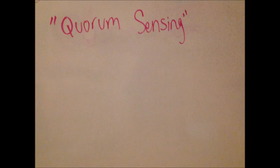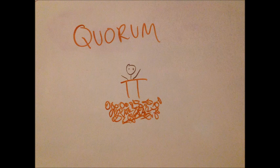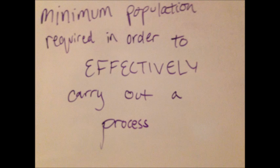Let's start with the word itself, quorum sensing. The word quorum is a Latin word meaning the minimum number of members of an assembly or society that must be present at any of its meetings to make the proceedings of that meeting valid. In other words, the quorum is the minimum population required in order to effectively carry out a process.